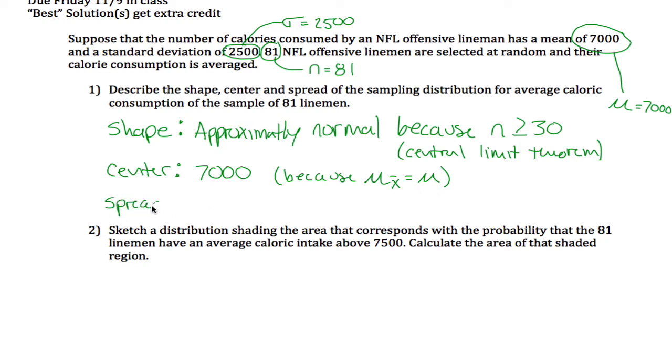The spread will be 2,500 divided by the square root of 81, which is 2,500 over 9, which is 277.78. And that is because sigma sub x bar, the standard deviation of our sampling distribution, is sigma over the square root of n.